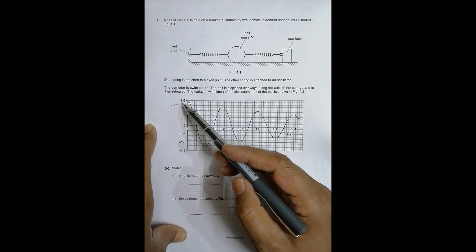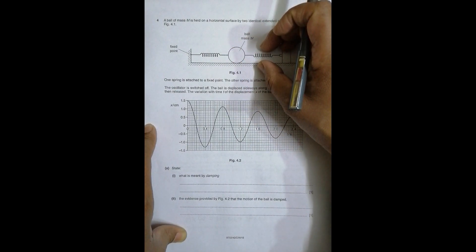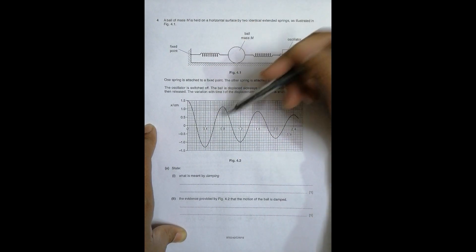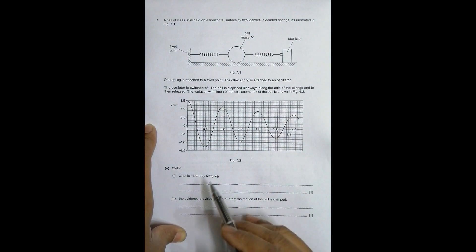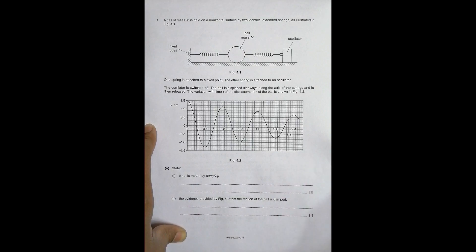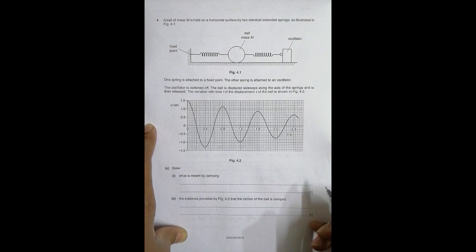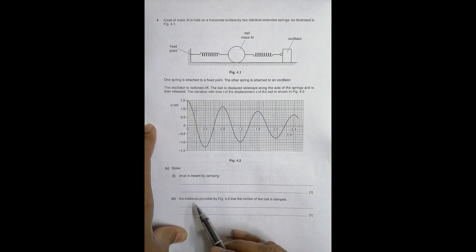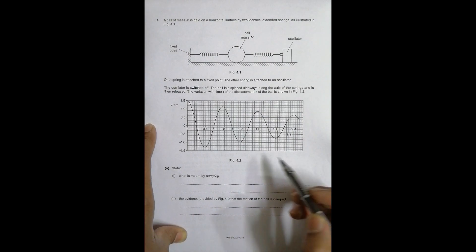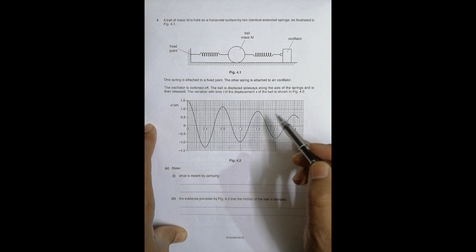The graph shows that the displacement was highest at the beginning. As the ball oscillates, it goes through various positions. The question asks: what does damping mean? Damping means the lessening or decrease of amplitude of the motion as time goes by. The evidence from figure 4.2 that the motion of the ball is damped is provided by the graph.